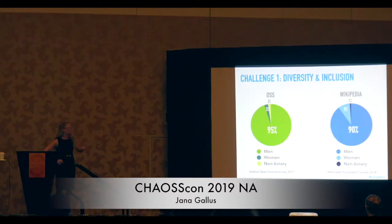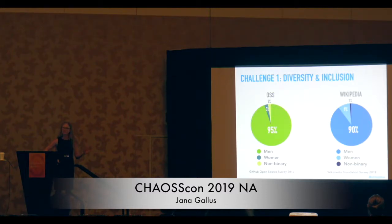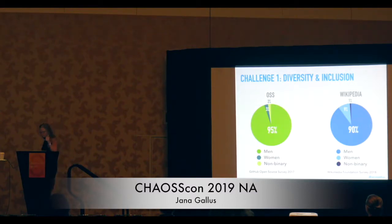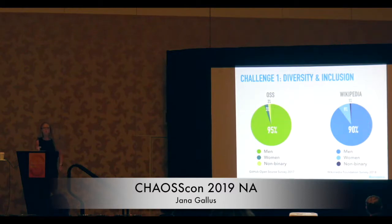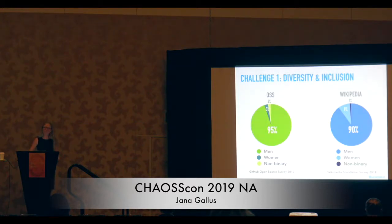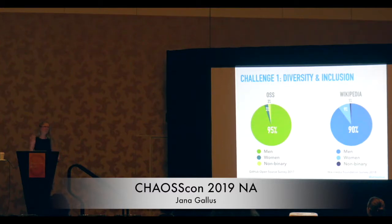These are some illustrative figures from open source but also from Wikipedia showing that less than 10% identify as female. The comparison to Wikipedia is interesting because Wikipedia is not just about code — the readership is gender balanced, and yet you observe this stark pattern of a predominantly male self-identified group of editors. And it turns out there is another barrier: an even lower percentage of edits come from females, so this is then an issue of inclusion.